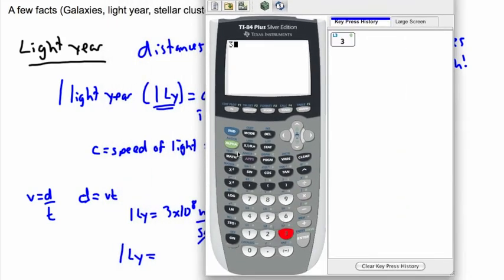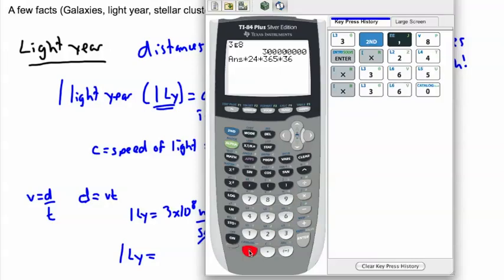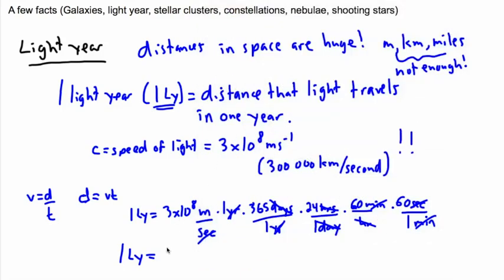So I'm going to get out my calculator and actually do this. So I want 3 times 10 to the 8. I'll press enter. I want to multiply that by 24 times 365 times 3,600. Press enter. And I get 9.46 times 10 to the 15. So that means this is what one light year is. It's 9.46 times 10 to the 15 meters.